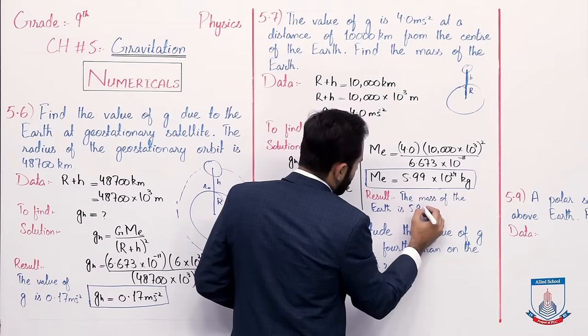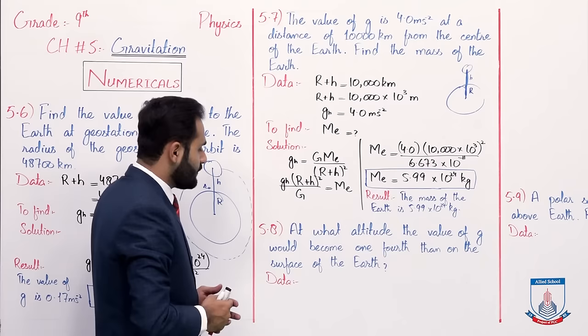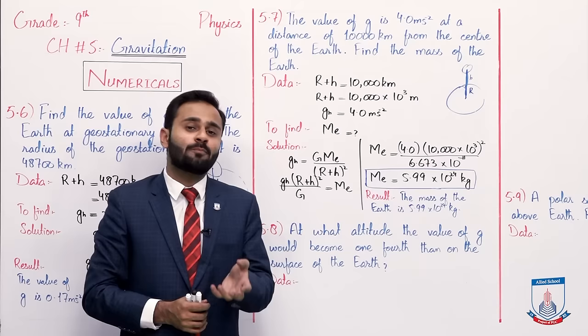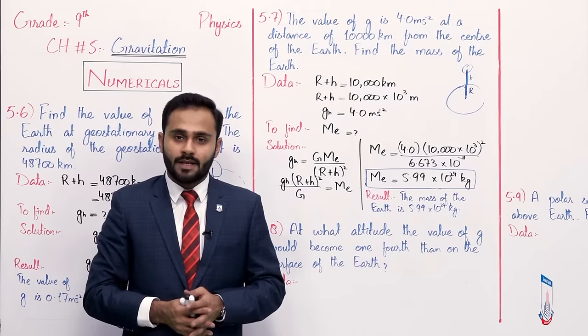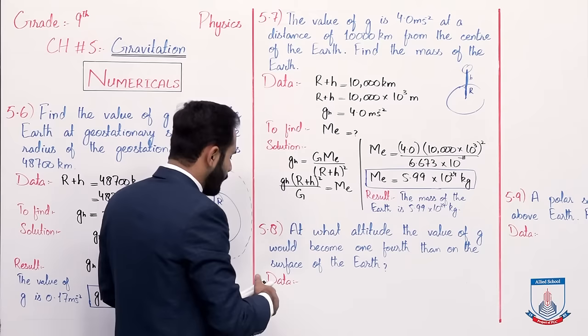The mass of the Earth is 5.99 multiplied by 10 to the power 24 kilogram. Next, numerical 5.8: at what altitude would the value of g become one fourth of its value on the surface of the Earth? So we are asked at what height gravity becomes one fourth. As you know, gravity on Earth is 10 m/s², so g_h will be one fourth of that.